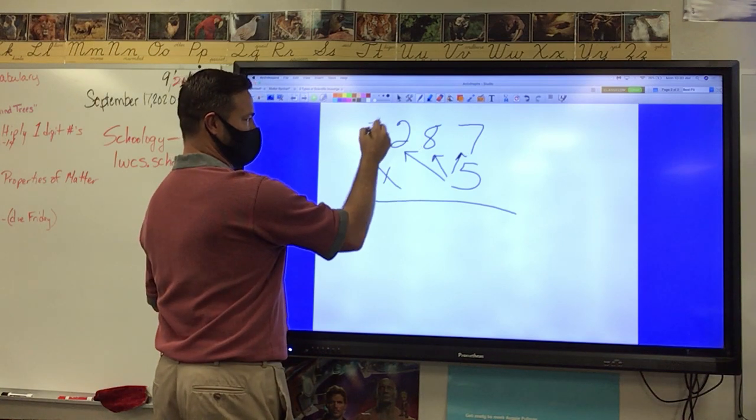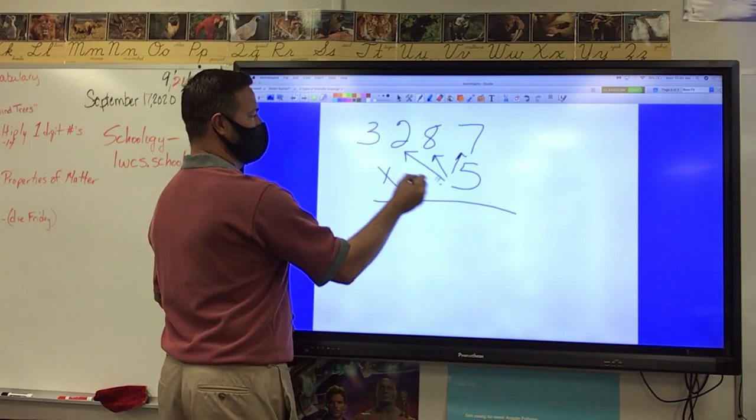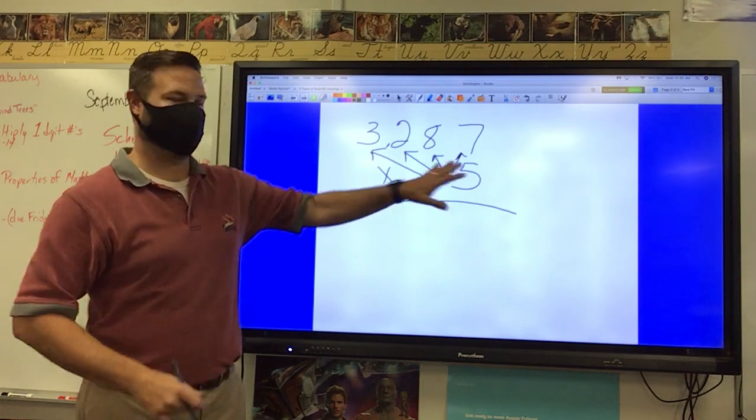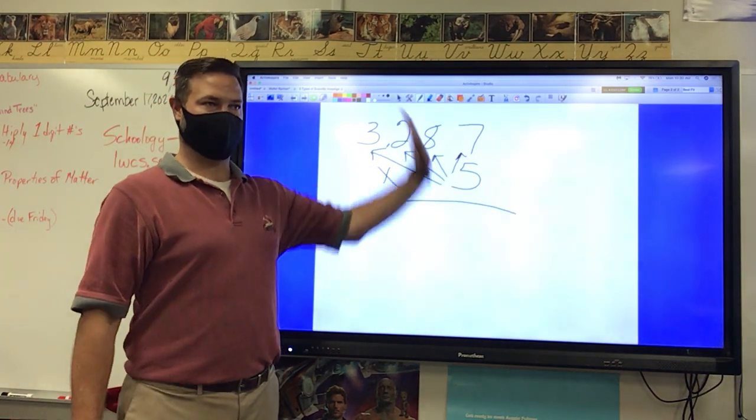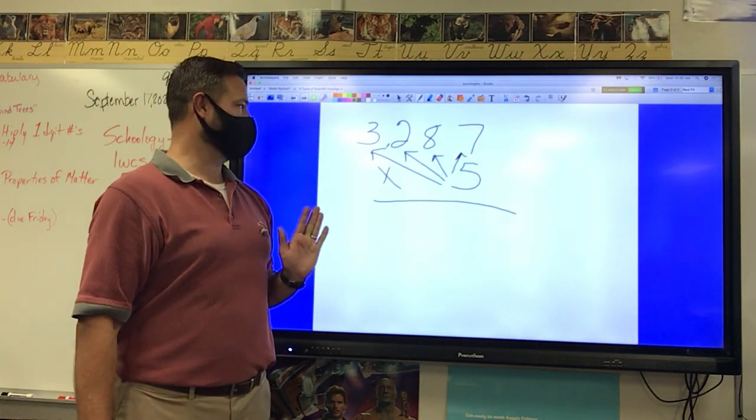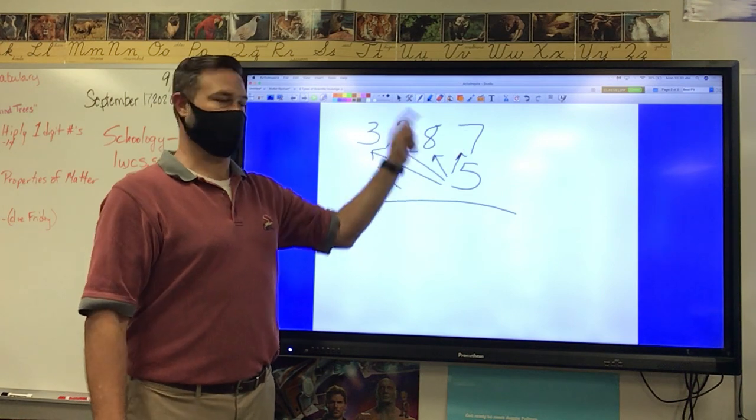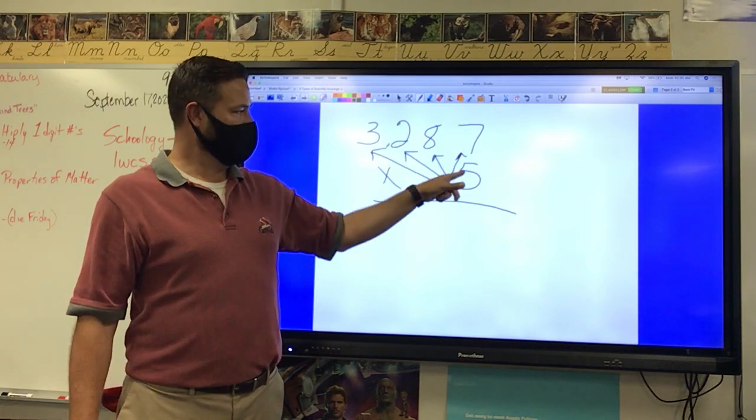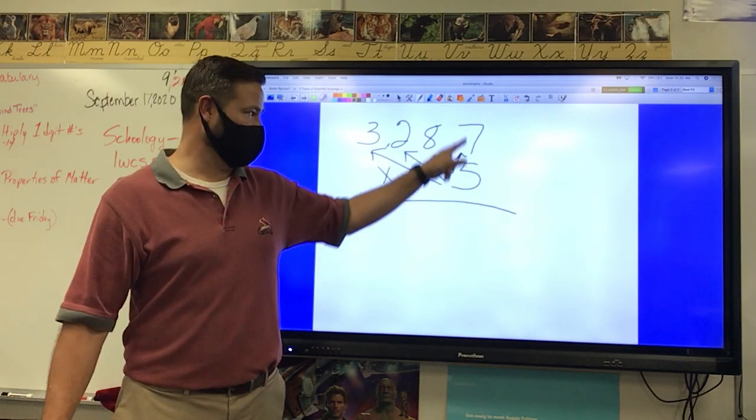What if I had another number here like a three, then what? Five times three. So notice I'm taking my five and I'm doing five times seven, five times eight, five times two, five times three. I'm going in order, but I'm using the five each time. So that's exactly how we're going to multiply this.